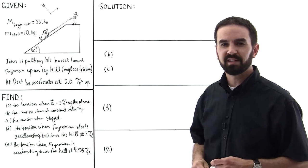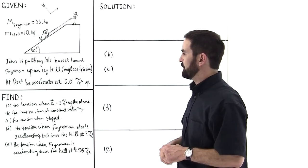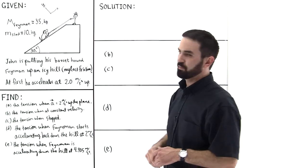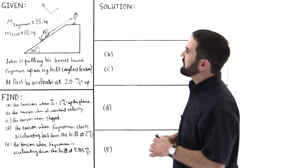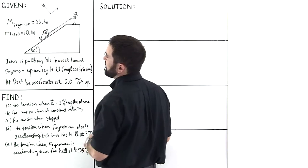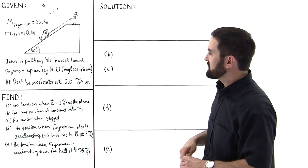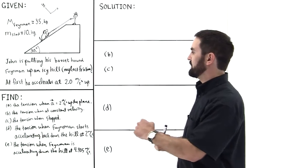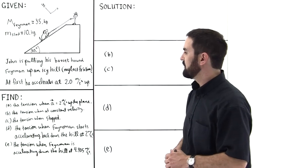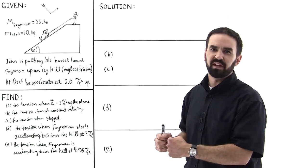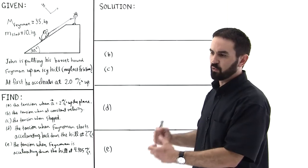John is pulling his basset hound Feynman up an icy hill, and we can neglect friction because of how icy the hill is. Feynman has a mass of 35 kilograms and the mass of the sled is about 10 kilograms. At first he's accelerating Feynman up the hill at 2 meters per second squared, and we're asked to find the tension in that case.